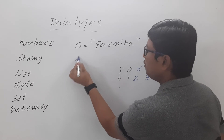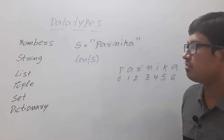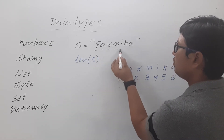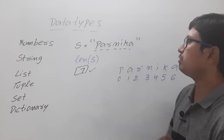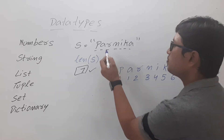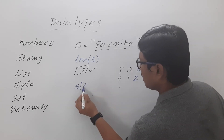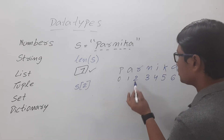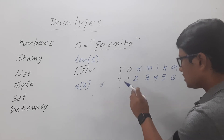If you want to find the length of the string you can write len(s), and since parnika has 7 characters it will display 7. If you want to find a specific character at a particular index, you can write s[2]; at index 2 the character is r, so it will display r.